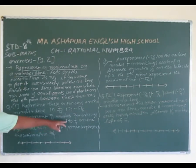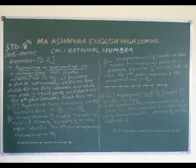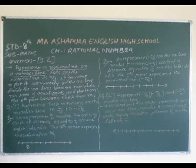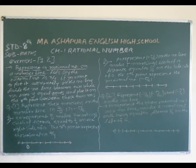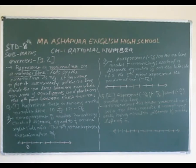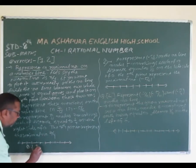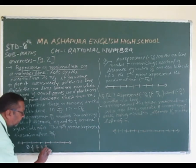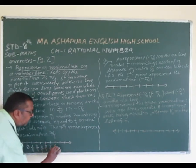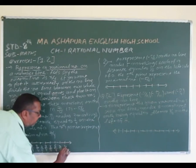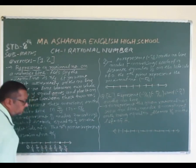From the right side of zero, the 7th point represents the rational number 7 by 4. So this is 1 by 4, this is 2 by 4, this is 3 by 4, this is 4 by 4, this is 5 by 4, this is 6 by 4, and this represents 7 by 4 — this is our number 7 by 4.